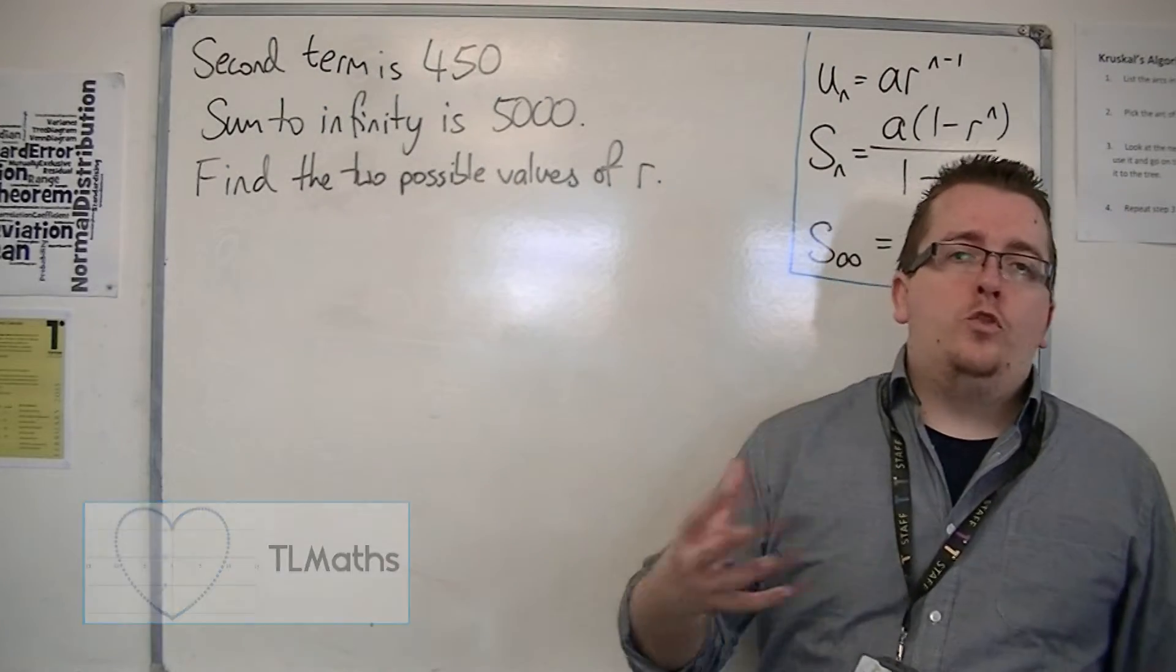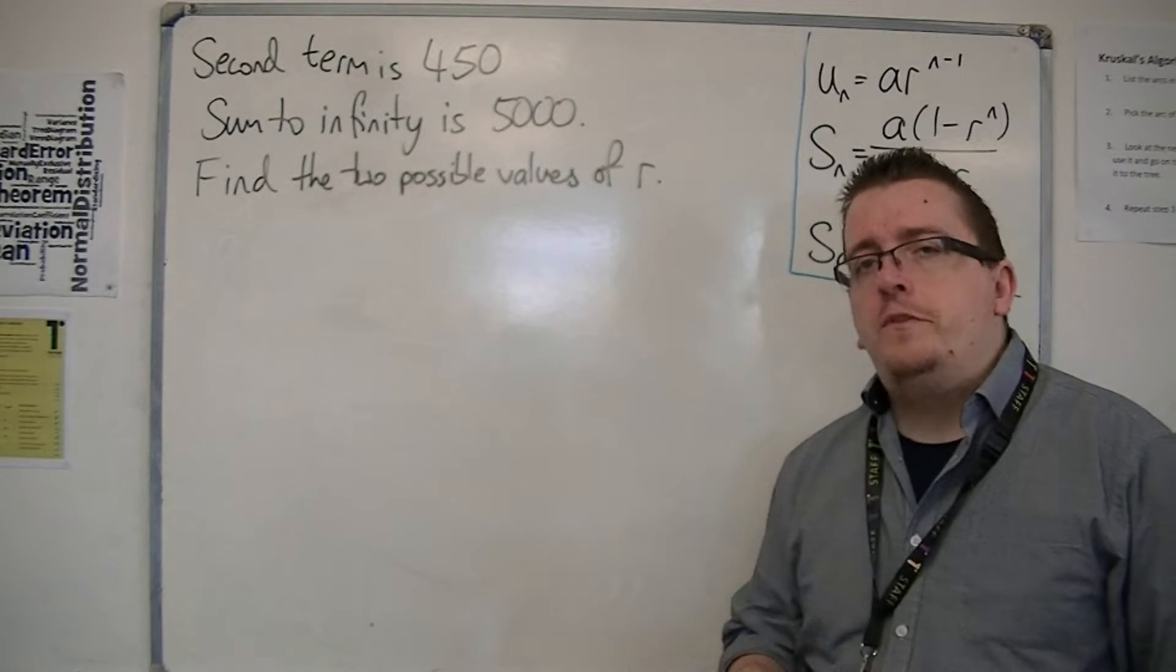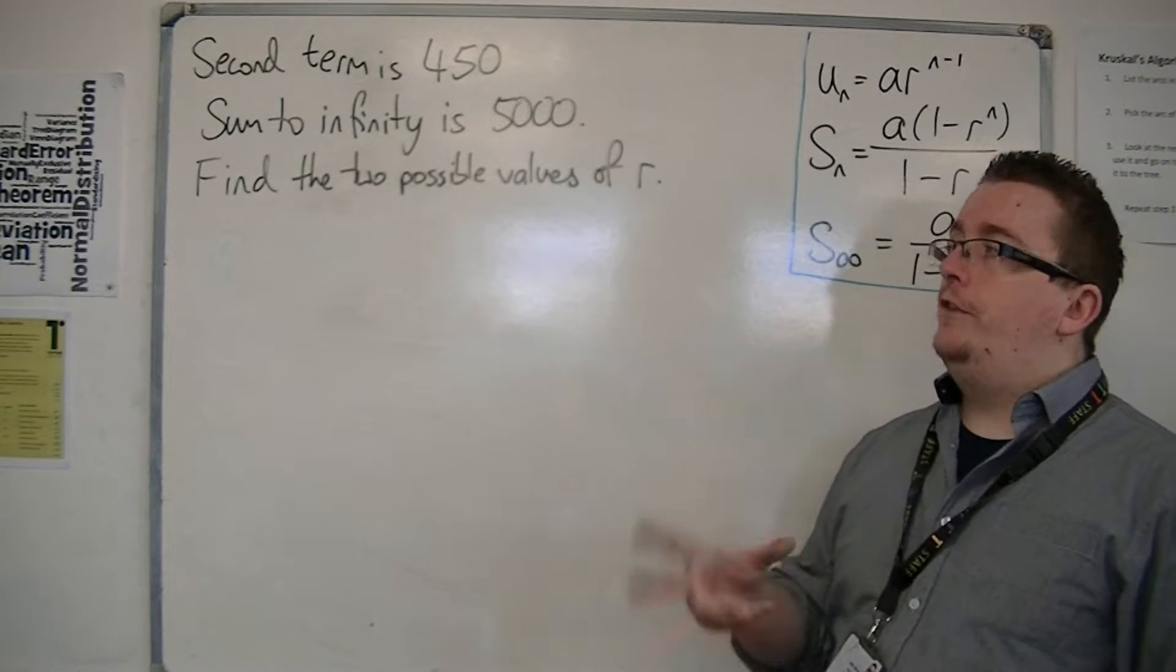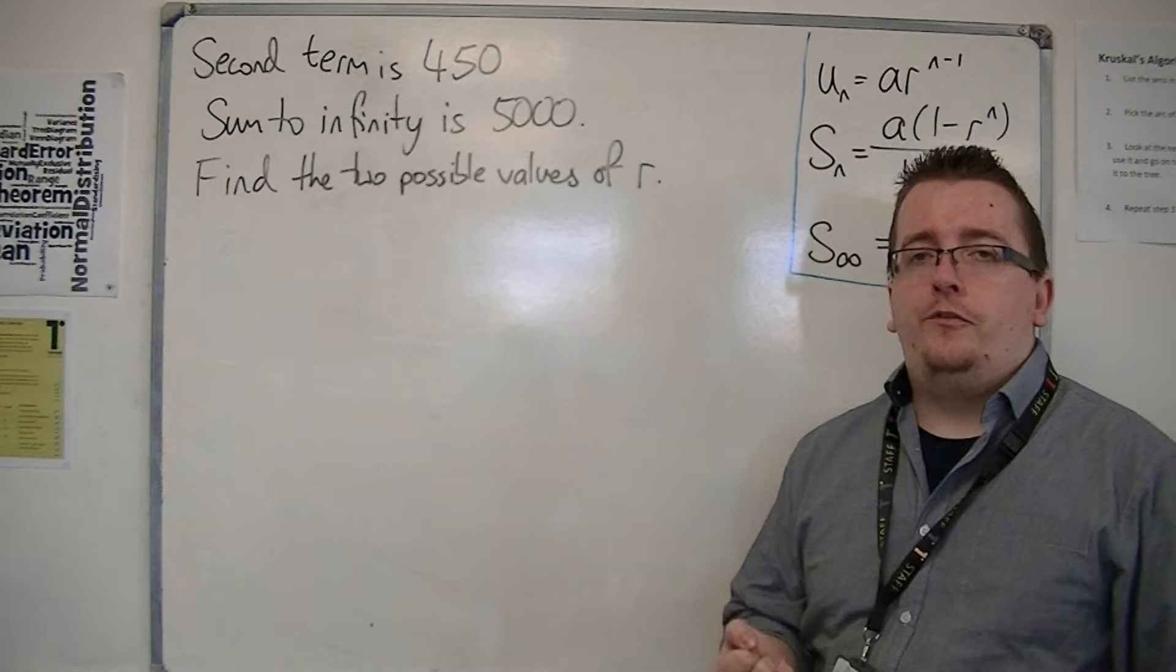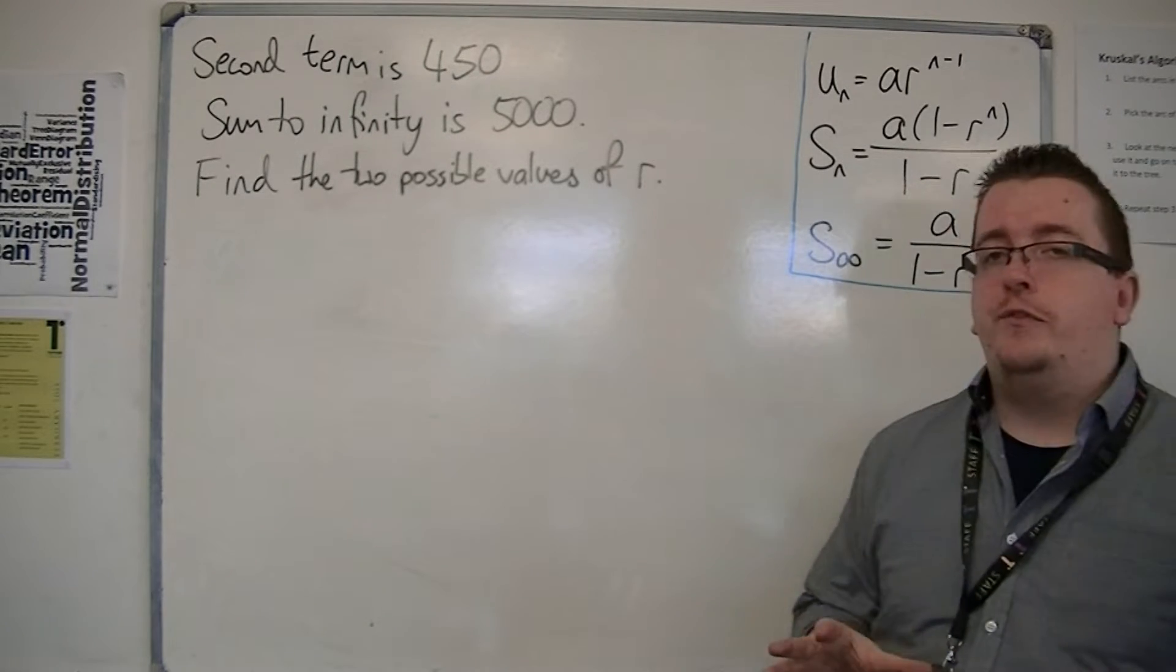In this video, we're going to be dealing with quite a tricky problem. We're told that for a geometric series, the second term is 450 and the sum to infinity is 5000. And we want to find the two possible values of r.